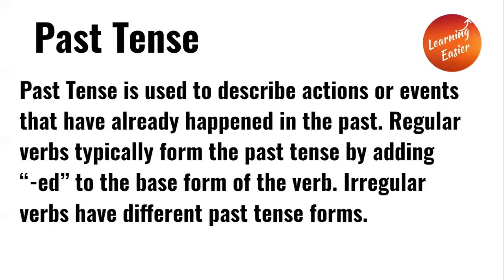Past tense is used to describe actions or events that have already happened in the past. Regular verbs typically form the past tense by adding "-ed" to the base form of the verb. Irregular verbs have different past tense forms.